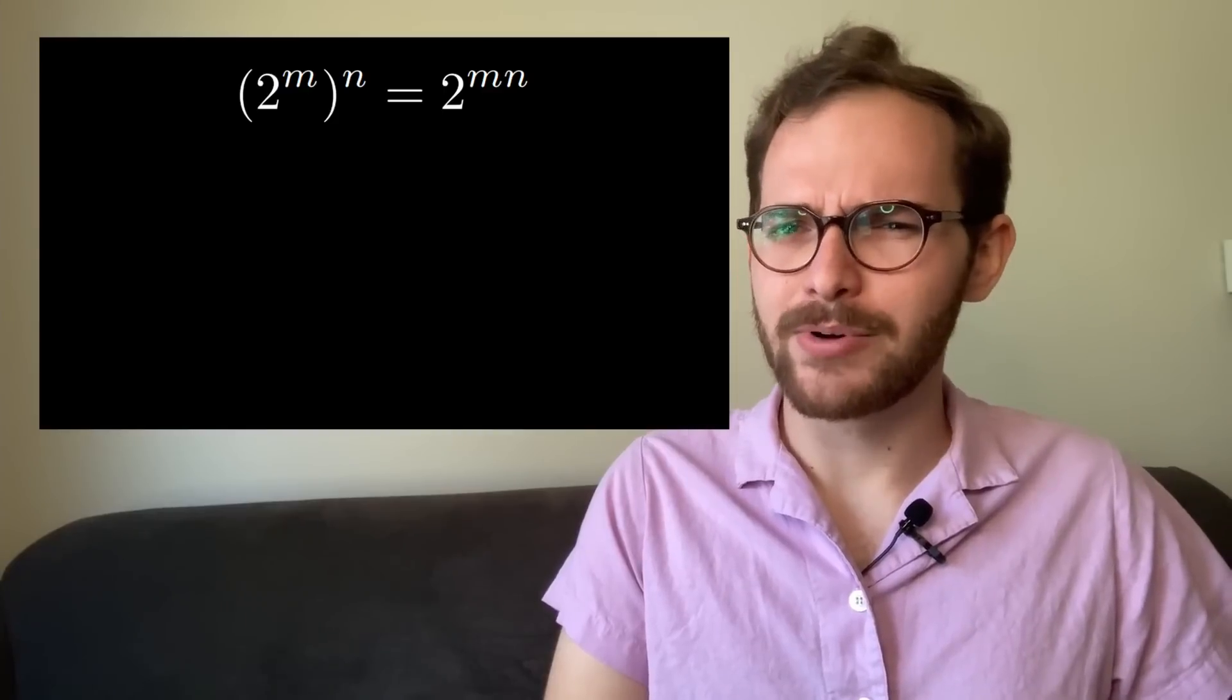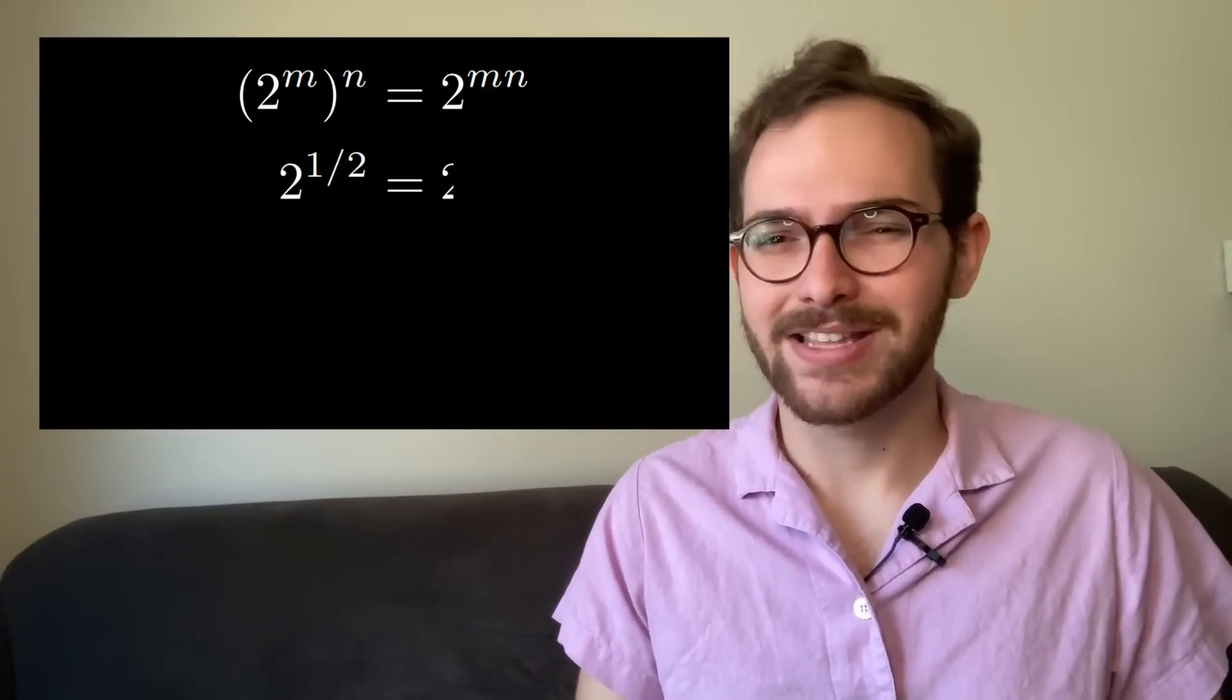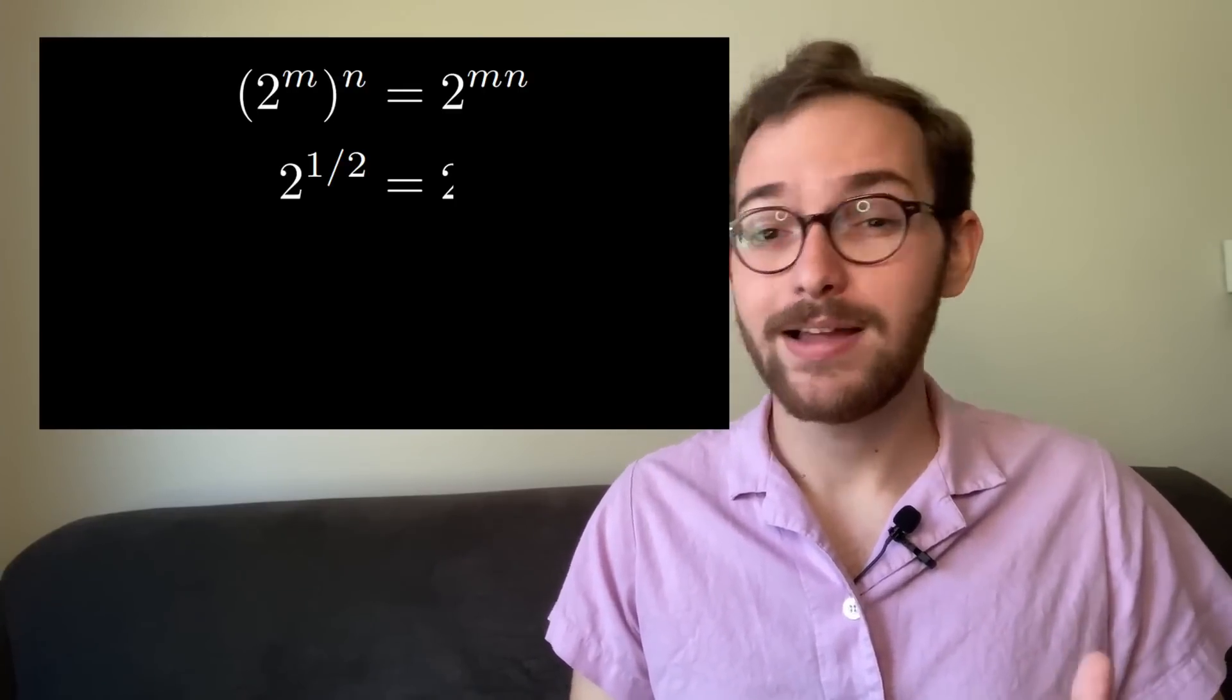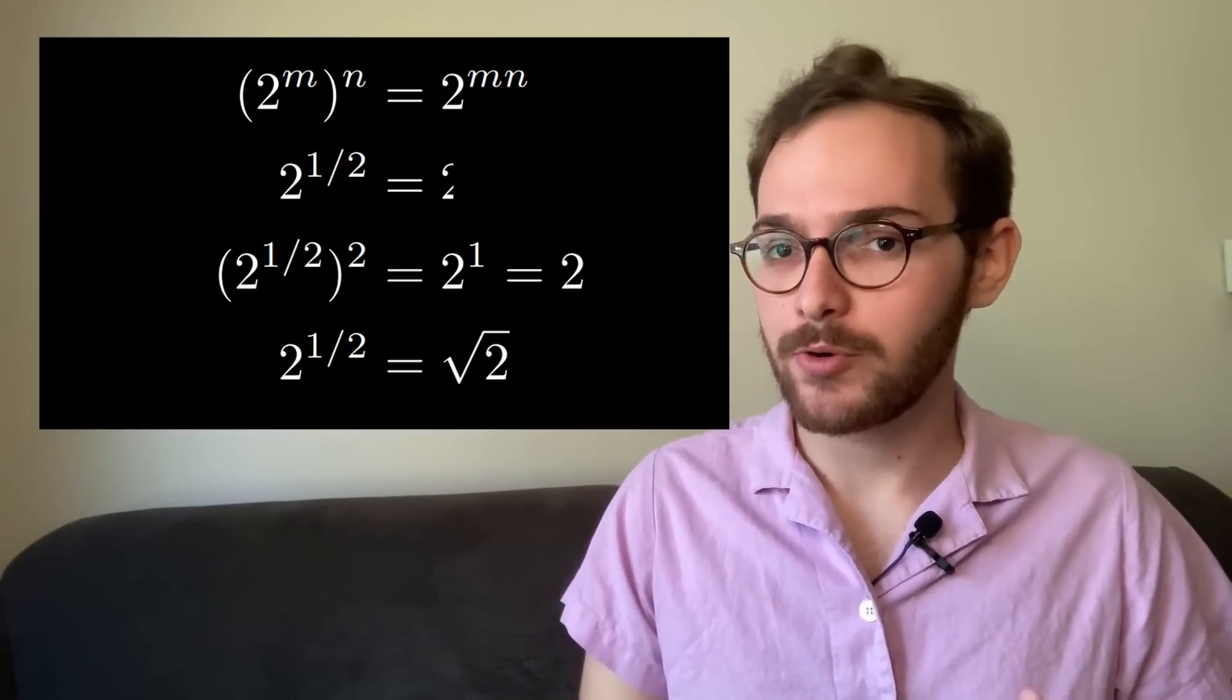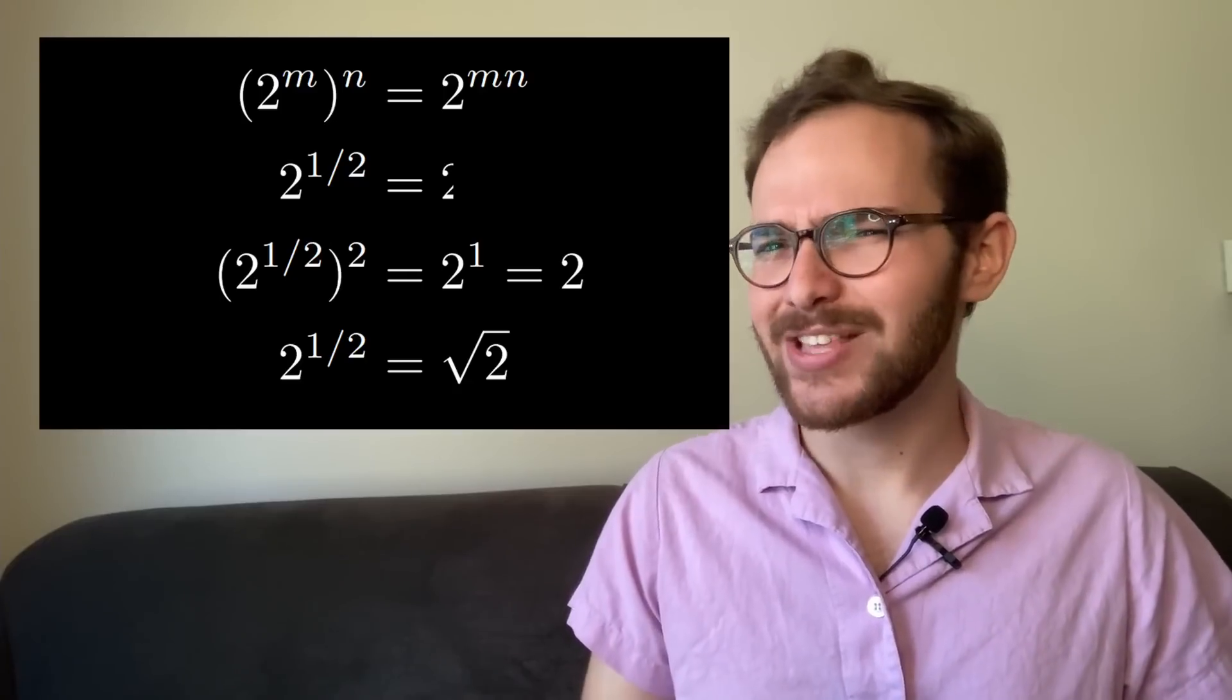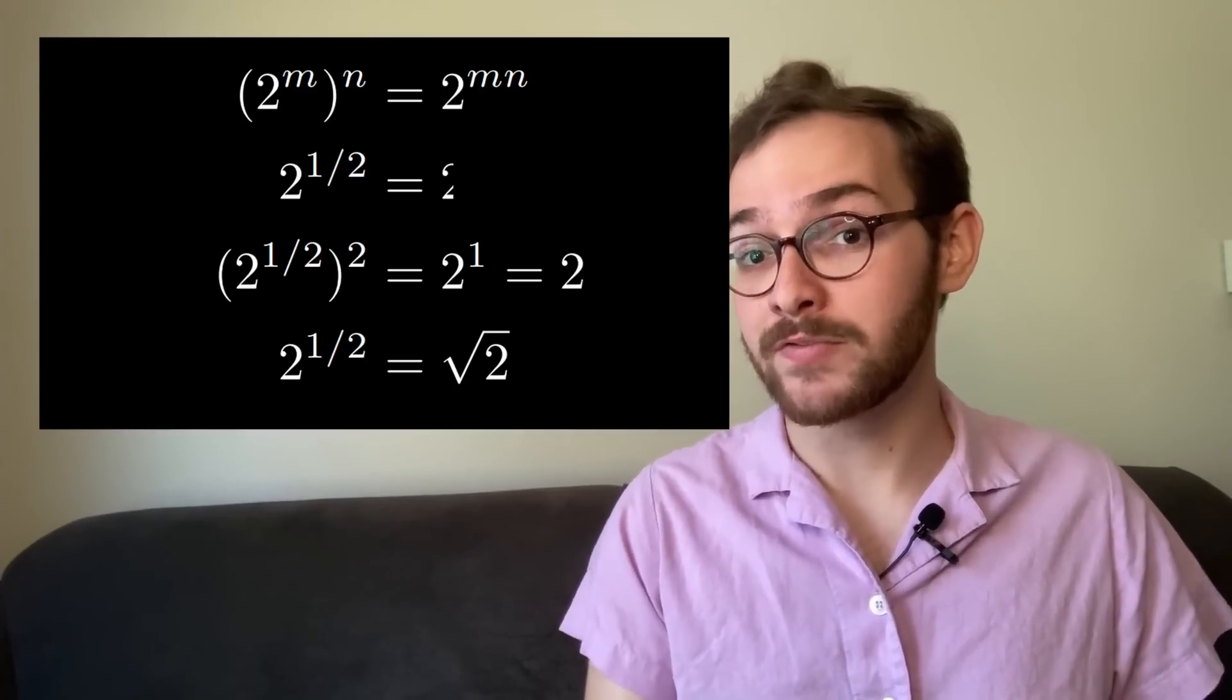We can use this property to explain otherwise strange ideas. 2 to the 1 half on its face doesn't really make sense—how could you multiply something a half time? But if we act as if it does, then using this property, 2 to the 1 half squared should be 2 to the 1, which is 2. And so since squaring 2 to the 1 half gives us 2, it should be the square root of 2.